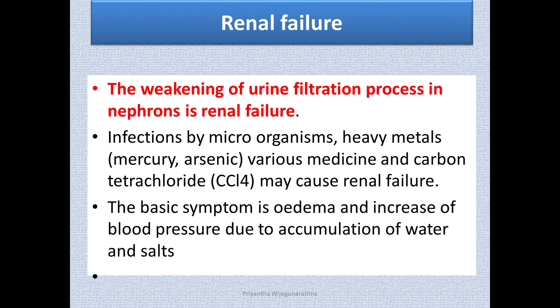Renal failure is the weakening of the urine filtration process in the nephron. The nephron is the structural and functional unit of the kidney. Due to weakening of the urine filtration process in the nephron, renal failure occurs. This occurs mainly due to infections by microorganisms, or sometimes due to heavy metals or toxic metals entering the body, such as mercury, arsenic, or insecticides.